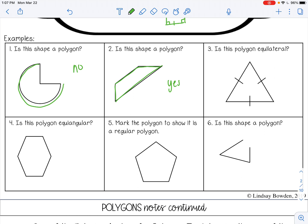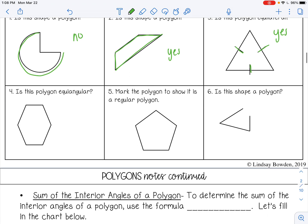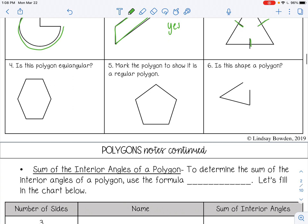Number three, is this polygon equilateral, meaning it has all equal sides. These markings here mean that all the sides are equal. So that would be yes. Number four, is this polygon equiangular? We don't have any markings to tell us that it's equiangular. And I can see that this angle here is way bigger than this angle here. So that would be a no.